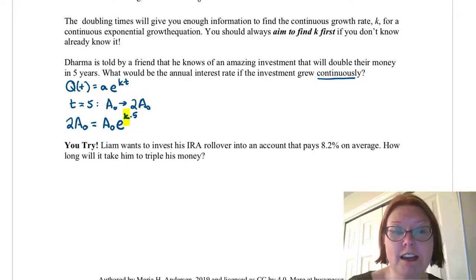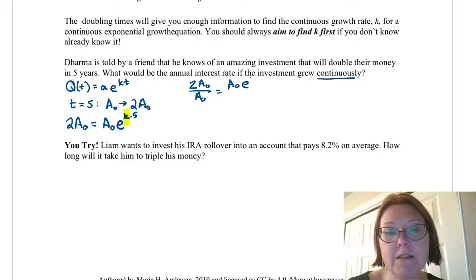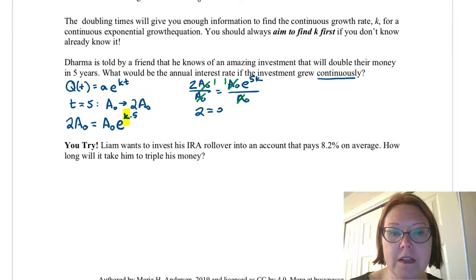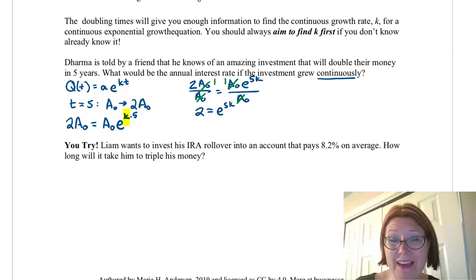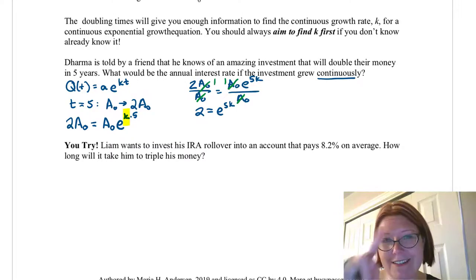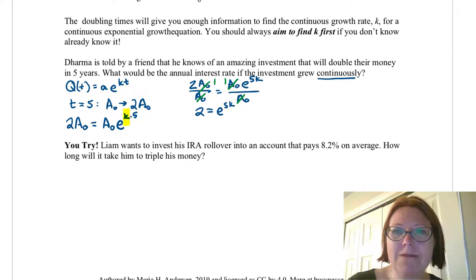We're going to start by dividing both sides by capital A sub-zero. Two capital A sub-zero divided by A sub-zero equals A sub-zero e to the five k divided by A sub-zero. And all of those A sub-zeros are going to reduce to make ones. That gives us two equals e to the five k. And that's actually why it doesn't matter that we don't know how much they start with because whatever they start with they're just going to double it and you can divide it out giving us two. So now we have two equals e to the five k.